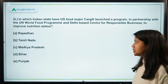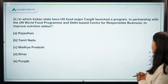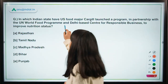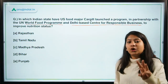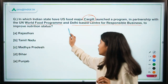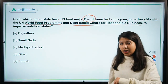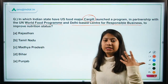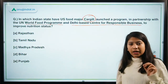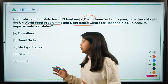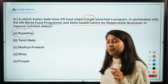The third question: in which Indian state have US food major Cargill, UN World Food Program, and Delhi-based Centre for Responsible Business launched a program to improve nutritional status? These three organizations have launched a program in a state to improve its nutritional status, and this program is in line with the Poshan Abhiyan of our central government. The right answer is Rajasthan, and the program will be implemented in Jaipur.